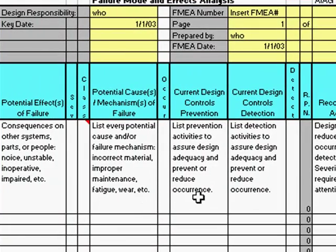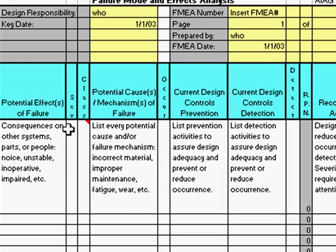You would next indicate what steps you've taken to prevent that problem and what steps you've taken to detect that problem. The columns in between are your scores. You would indicate, first of all, the severity of that consequence. Causing an accident or having a baby swallow a knob would be a fairly high severity.